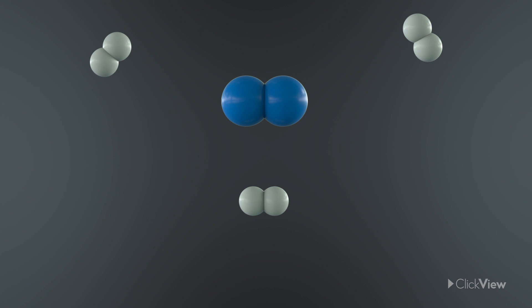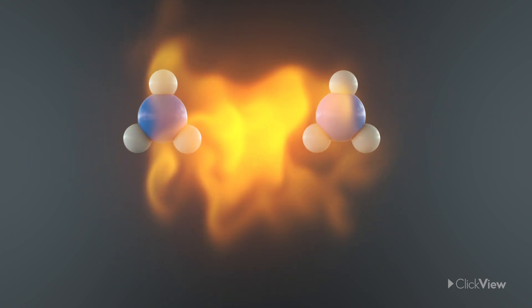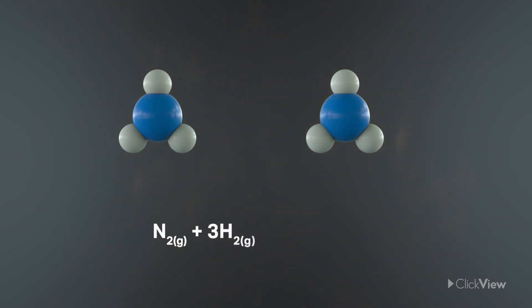Nitrogen and hydrogen molecules lose energy when they combine, releasing it in the form of heat. Since this reaction is exothermic, cooling the equilibrium mixture down favors the reaction that produces ammonia, over the reverse one that turns ammonia into nitrogen and hydrogen.